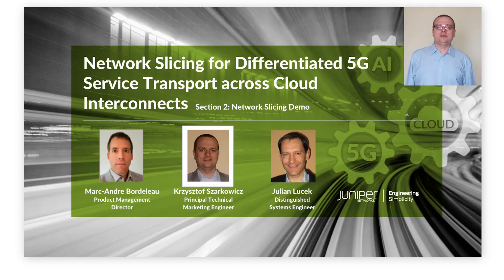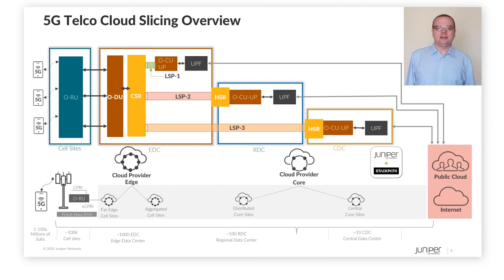I am Krzysztof Szarković, Principal Technical Marketing Engineer, and I will present the section describing the actual demo setup and functionality. The X-HAL transport network interconnects multiple telco cloud locations — edge, regional, central DCs — and provides connectivity to public clouds. This demo concentrates on MPLS transport; therefore LSPs are used for interconnections. LSPs are representations of the slice in the X-HAL transport network. For example, LSP1 with low-latency characteristic is used as the transport for the URLLC slice.